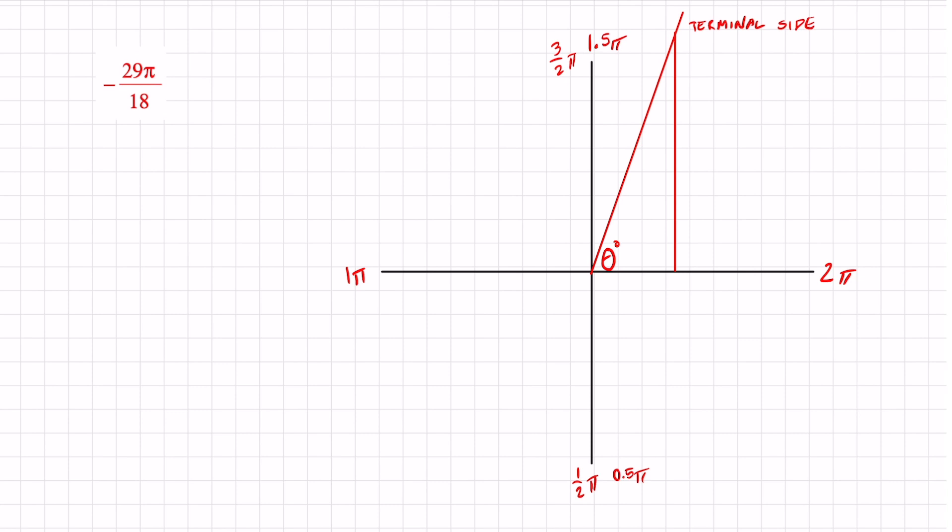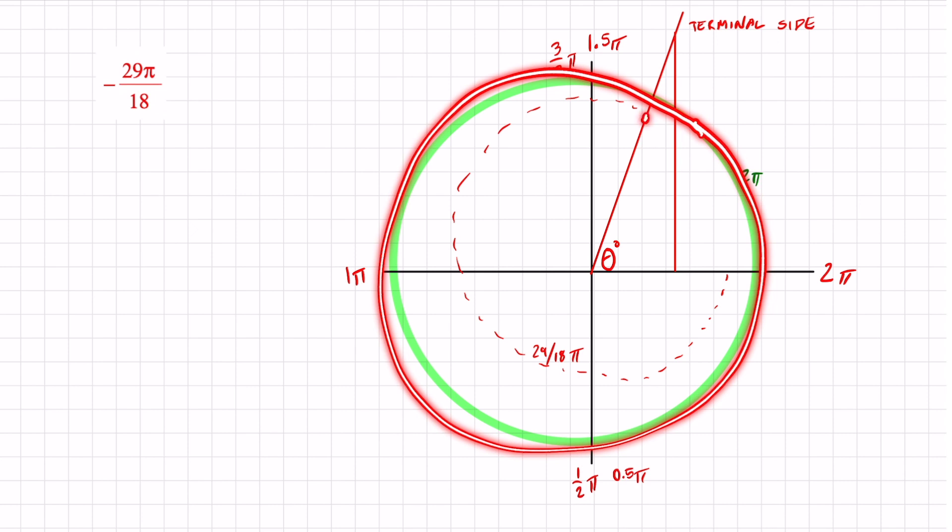So visualize this. You don't need any formulas. You don't need to memorize anything. Let's just use common sense. We said that from here all the way, and don't make fun of my circle, it's not the greatest. It's actually pretty good though. That dotted line represents 29 over 18 π. One full circle is 2π.